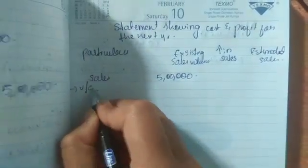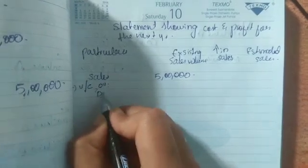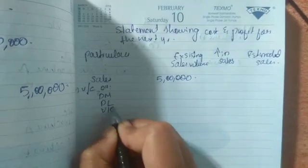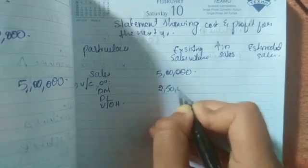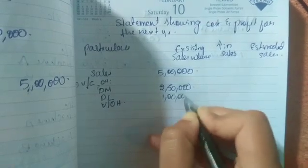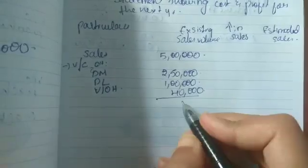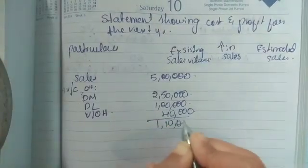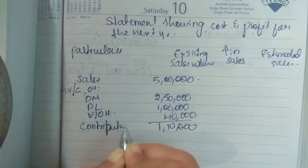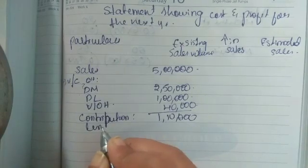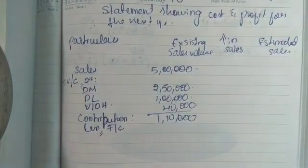Less variable cost: there is direct material, direct labor, and variable overheads. Direct material is two lakh fifty thousand, direct labor is one lakh, and variable overhead is forty thousand. Sales minus variable cost gives us the contribution. Fixed cost is not given in this question, so we will calculate it separately.